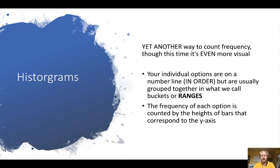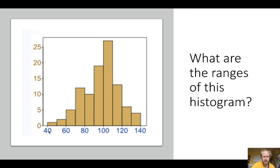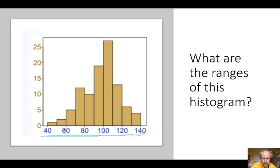Histograms are another way to show frequency. Usually with histograms you have ranges, so it looks like bars but the bars are touching each other because they're in sections. The frequency is just the height of those sections. The ranges here look like every five. On Khan Academy they'll be easier to read, but in a newspaper or on a website they can look a little funky. So the x-axis goes 40 to 60, meaning this is probably 50 in the middle, then 70, 90, 110, 120, 130.